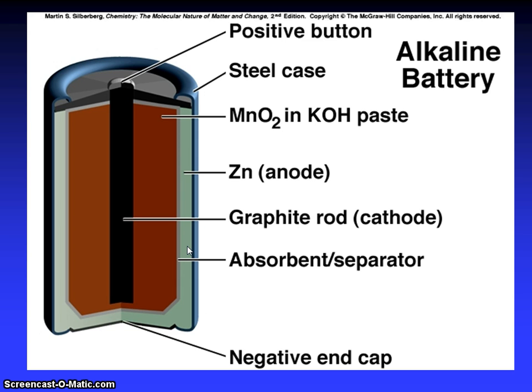Positive button, steel case. This is the example of alkaline battery. MnO2 in KOH paste, zinc anode, graphite rod cathode, absorbent separator, and negative end cap.